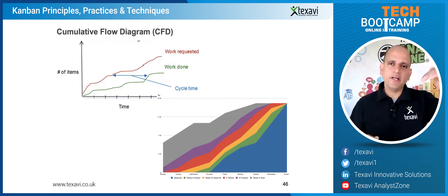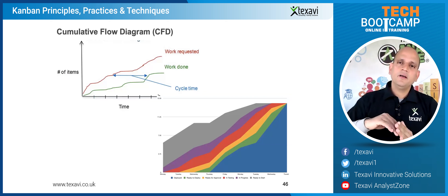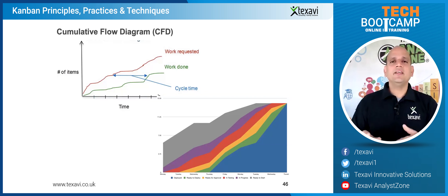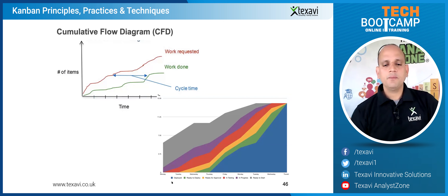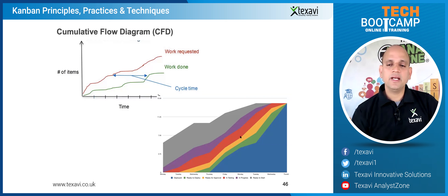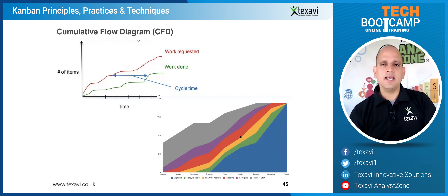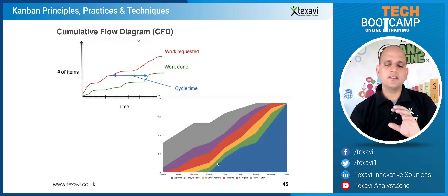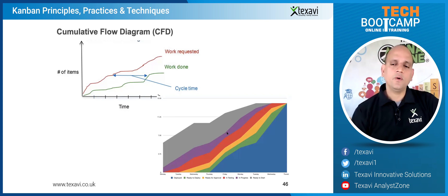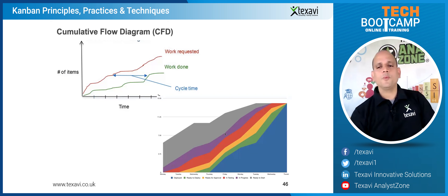The CFD is not burning down — it's measuring the work actually done over time. On Monday there's not much work, but by Tuesday it has increased, showing you are delivering more. You can see 'ready for approval' in yellow rising as you look at Thursday, and similarly in testing. At different steps in the process, you can see where each piece of work stands and how much has been done — that's the beauty of the CFD, a very popular tool within Kanban.